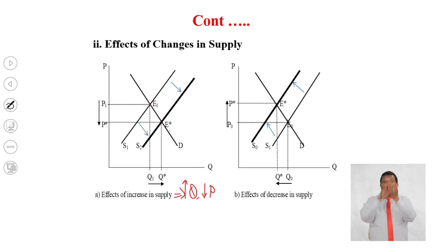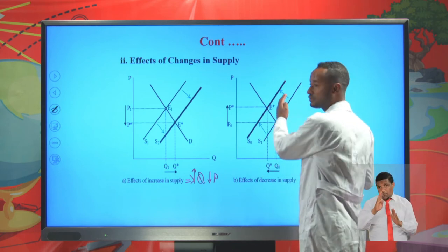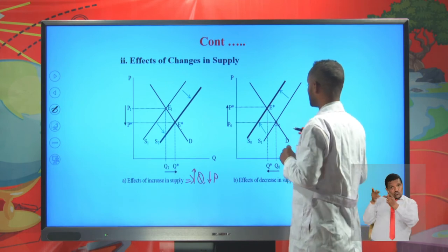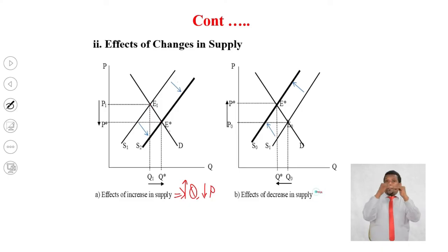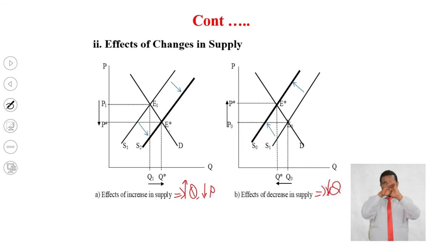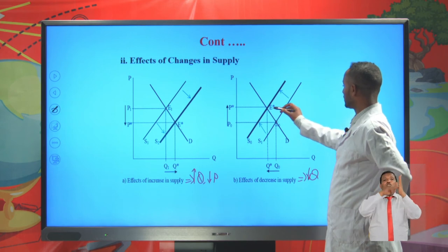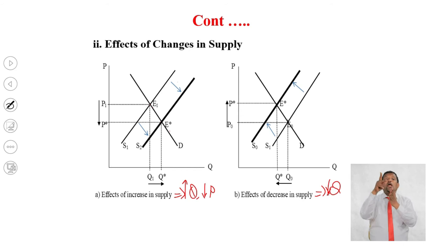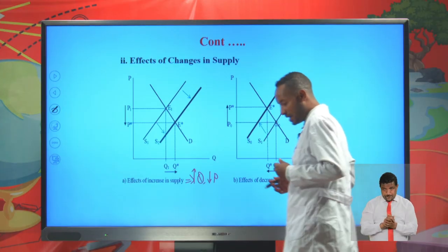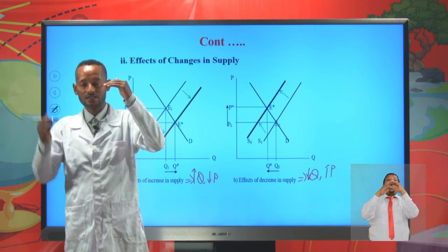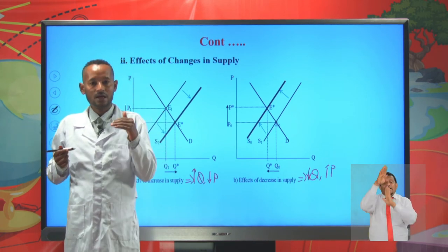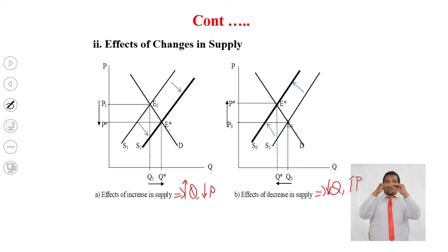Now let's see the effects of a decrease in supply. Decrease in supply is represented by a leftward shift of the supply curve from its original position. The equilibrium point shifts from E₀ to E*, and the equilibrium quantity shifts from Q₀ to Q*, so with a decrease in supply, the equilibrium quantity will also decline. The equilibrium price shifts from P₀ to P* and will increase. So while demand remains unchanged: increase in supply increases equilibrium quantity but decreases equilibrium price, and decline in supply decreases equilibrium quantity but increases equilibrium price.